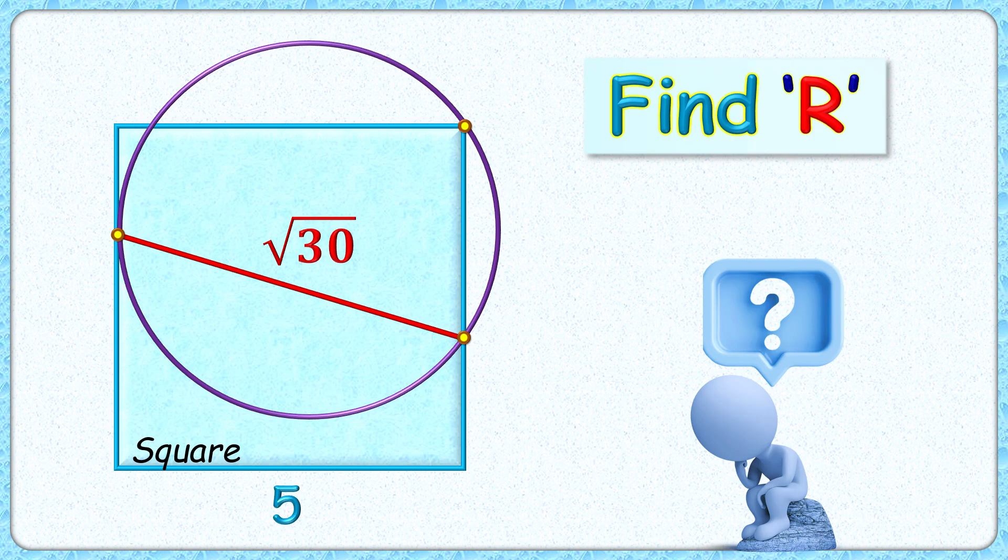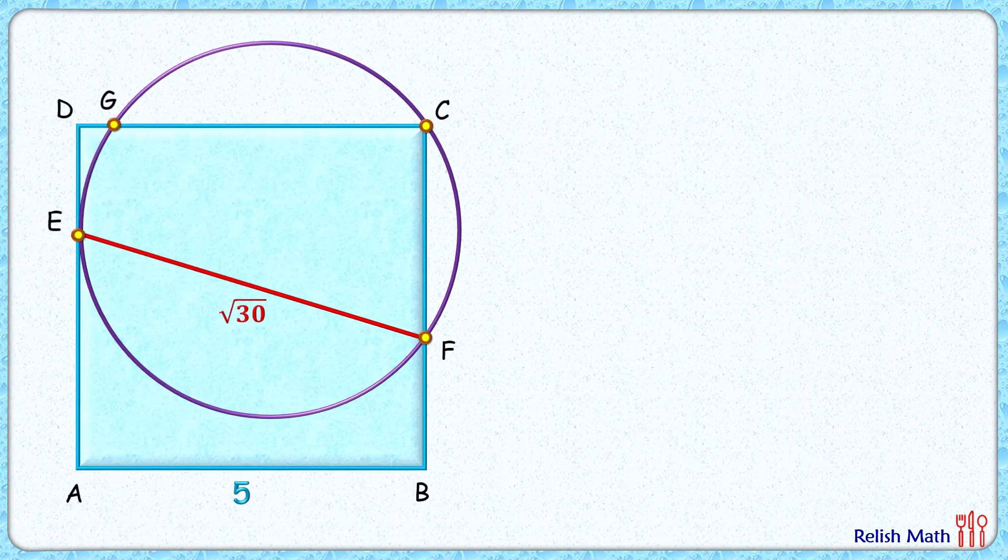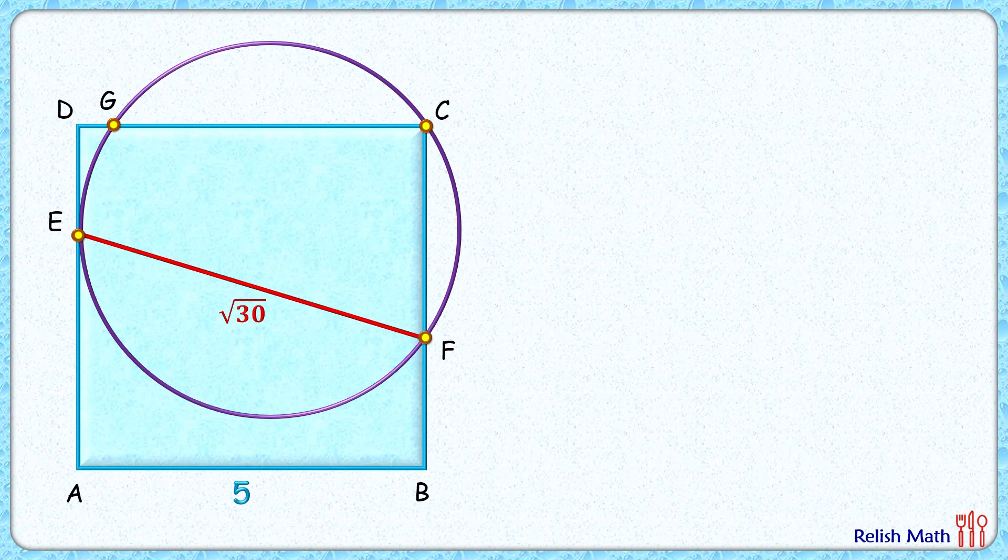Welcome everyone. This interesting question given to us is a square with side length 5 centimeters and a circle as shown in the figure. The distance between this point of tangency and this point of intersection is √30 centimeters. The exciting part is with this limited data, we have to find the radius of the circle. Let's check this simple and elegant solution.